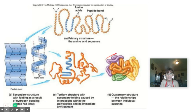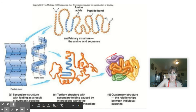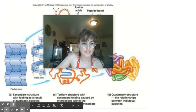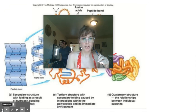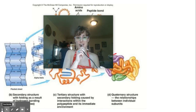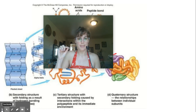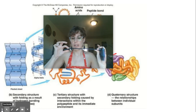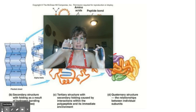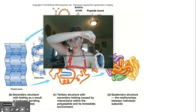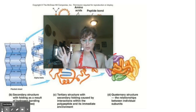Now let's talk about primary, secondary, tertiary, and quaternary structure. For primary structure, I'll use my microphone cable since it bends. Primary structure is simply the sequence of amino acids — amino acid, amino acid, amino acid — in what order? Is it a cysteine with a glycine? What is the arrangement of amino acids in a row? That is primary structure.